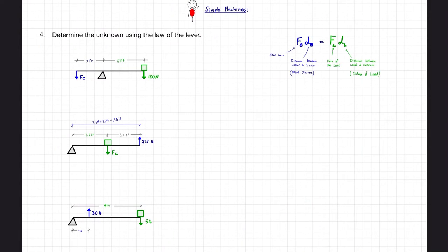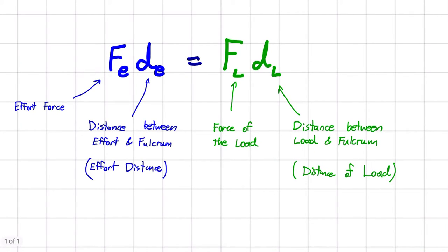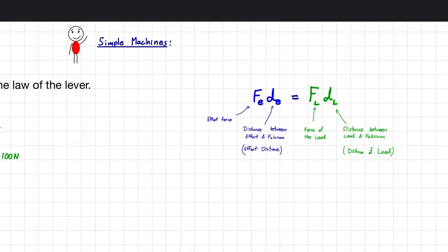All right, so now let's do a few examples where we want to determine the unknown using the law of the lever. What is the law of the lever? Well, it's this formula here that tells us that the effort force multiplied by the distance that the effort is applied at is equal to the force of the load multiplied by the distance that the load is applied at. So that tells us the theory behind this formula. Now let's do a couple of questions and examples where we get to apply this equation.